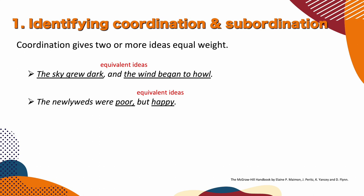Another example: 'The newlyweds were poor. The newlyweds were happy.' If we wanted to join those two sentences, we just add a comma and a coordinating conjunction like BUT. And there we have it — they are equivalent ideas.